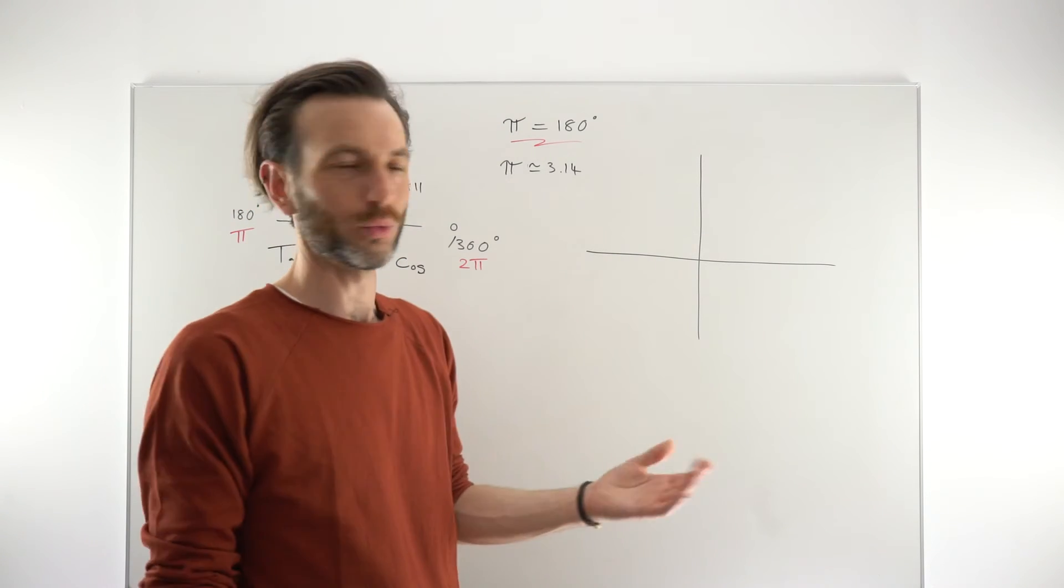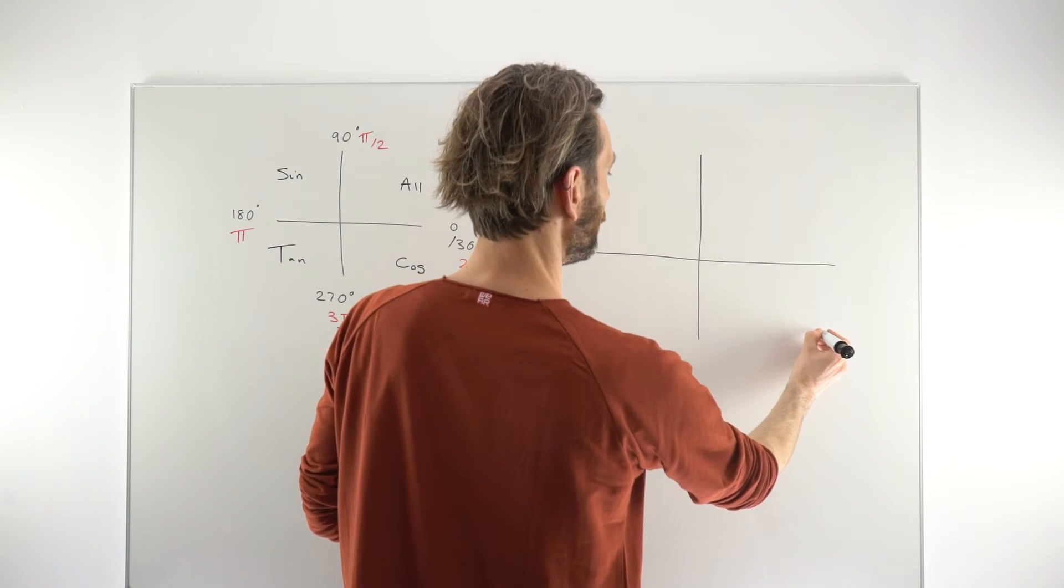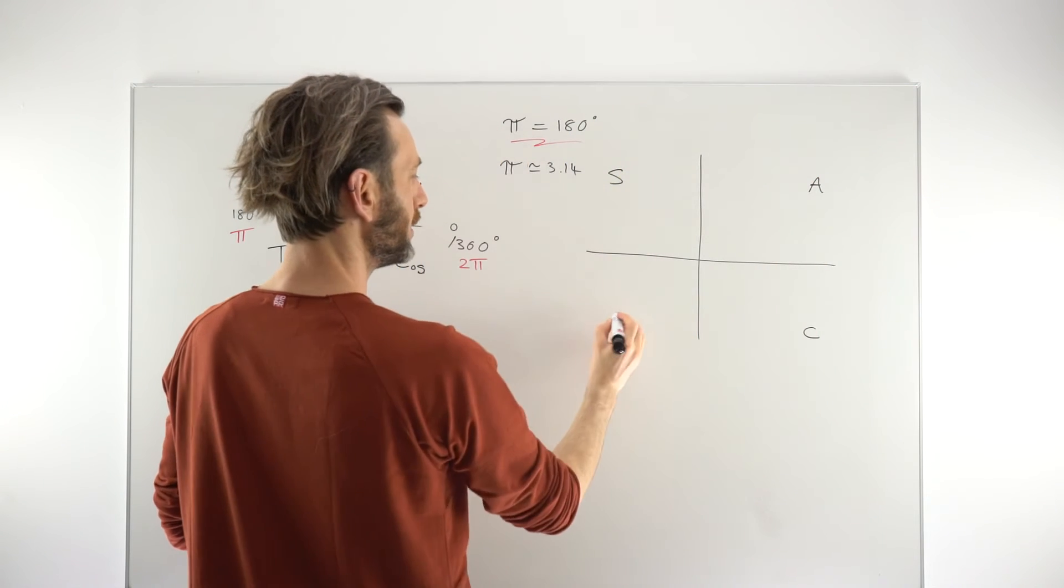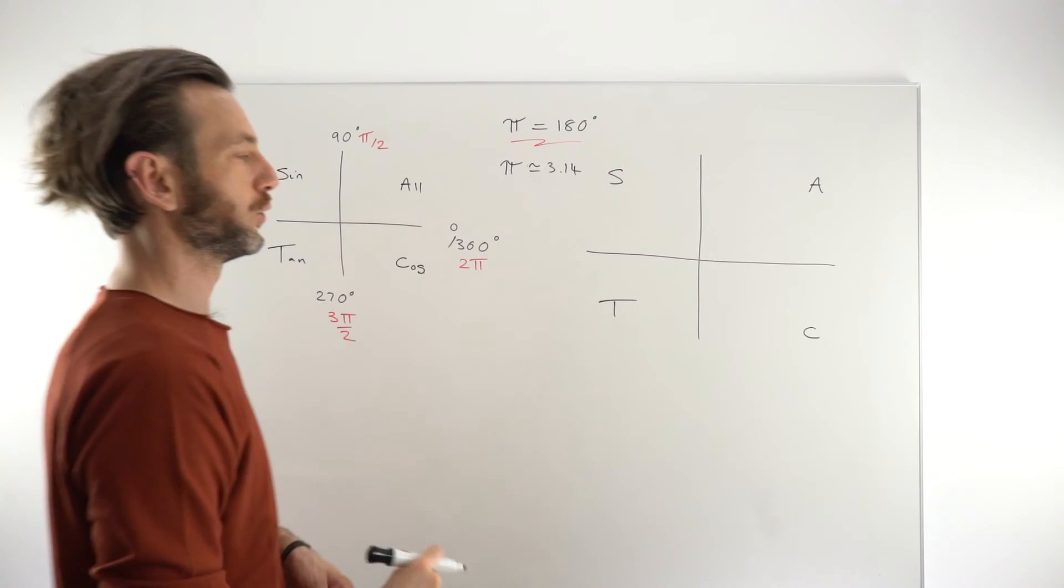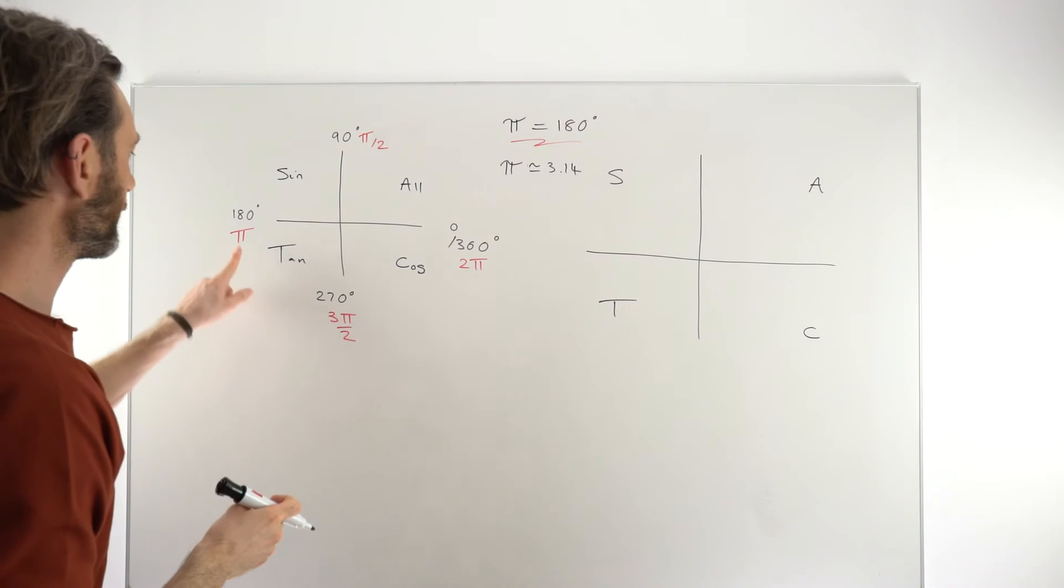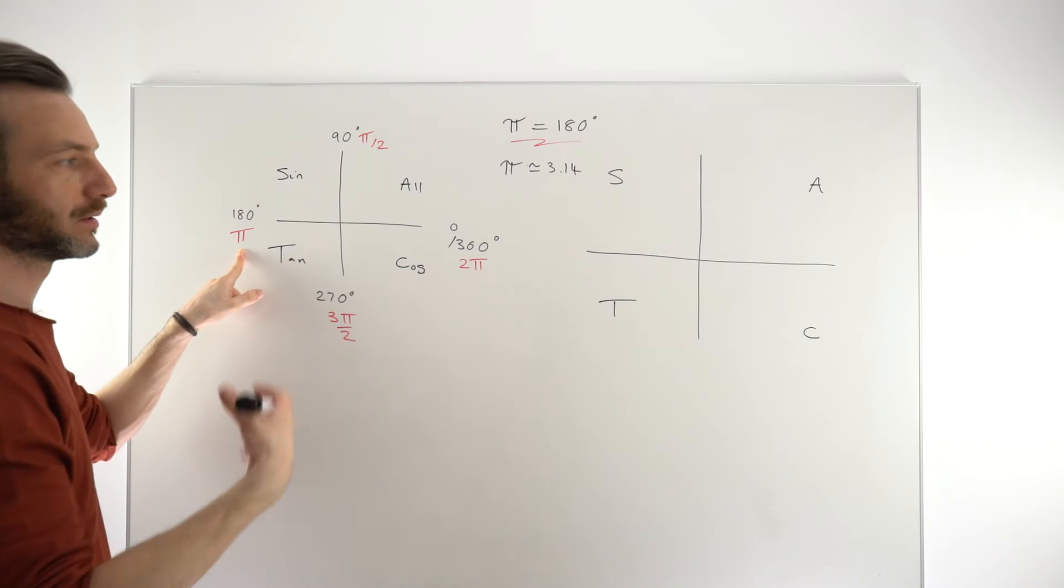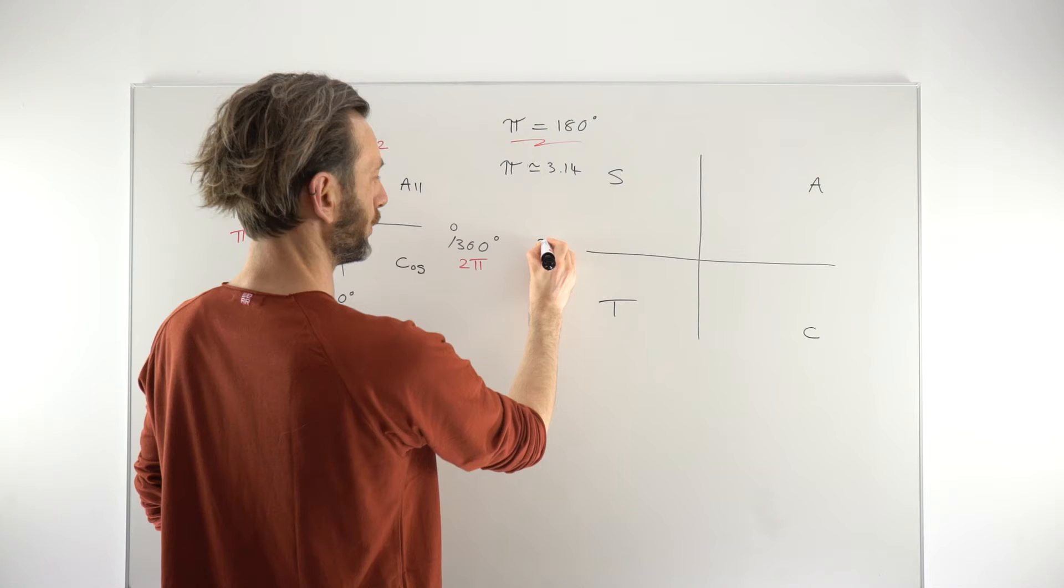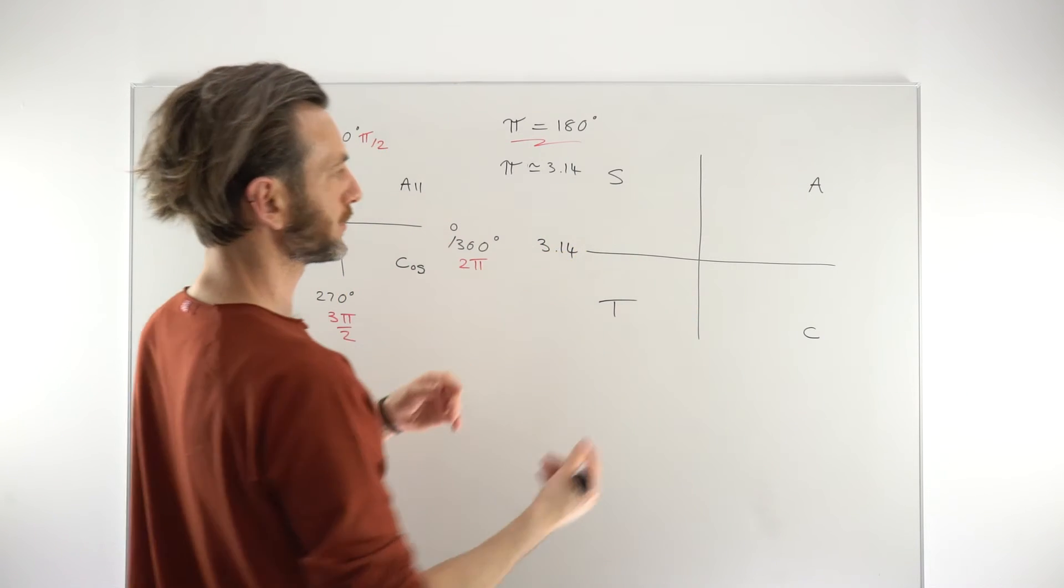But it's not really that much of a leap. So we just take our CAST diagram, set up in the same way with the usual quadrants, but we're just going to think of this as the number 3.14. You don't need to be too accurate with this. So it's fine to call it 3.14 or thereabouts.